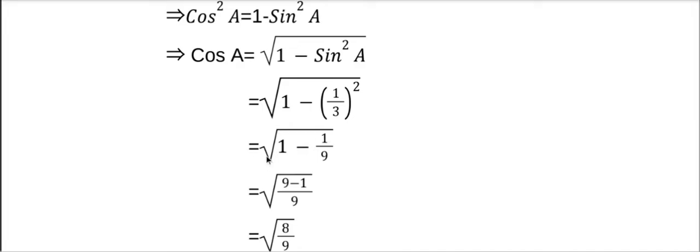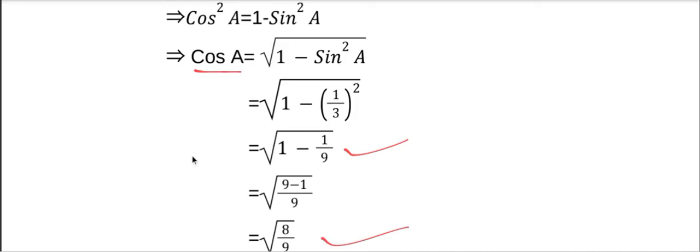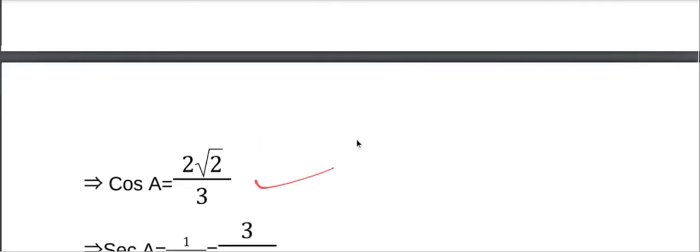That is equal to root over 1 minus 1 third whole square, which is equal to 1 by 9. Simplifying, root over 9 minus 1 by 9, that is equal to root over 8 by 9. Root over 8 is 2 root 2 and root over 9 is 3, so here cos a equal to 2 root 2 by 3.